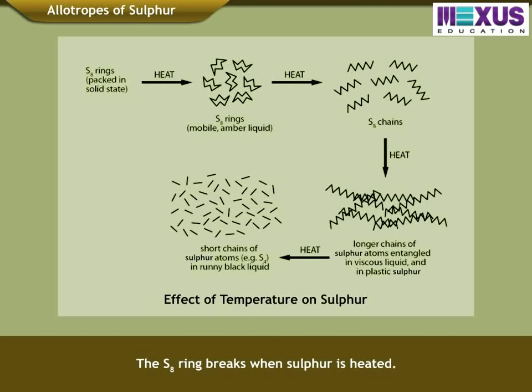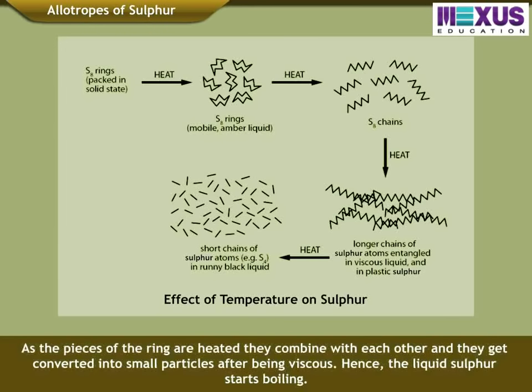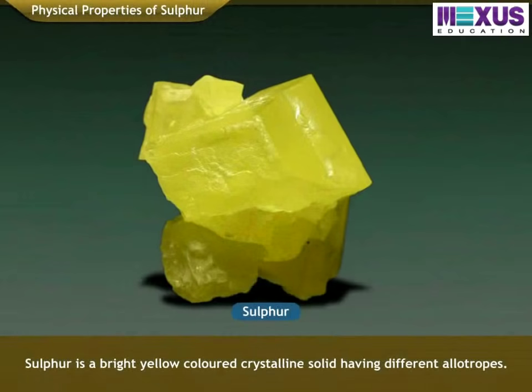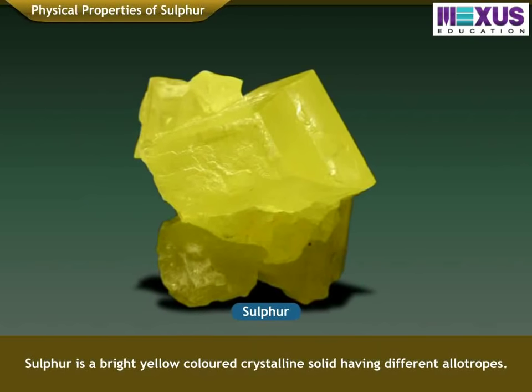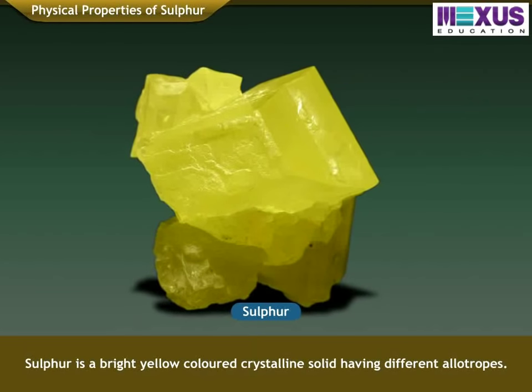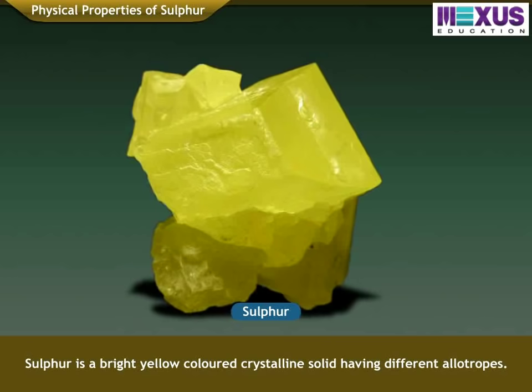This S8 ring breaks when Sulphur is heated. As the pieces of the ring are heated, they combine with each other and get converted into small particles after becoming viscous. Sulphur is a bright yellow-coloured crystalline solid having different allotropes.